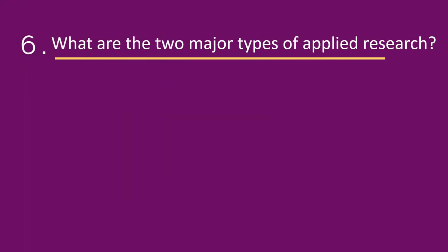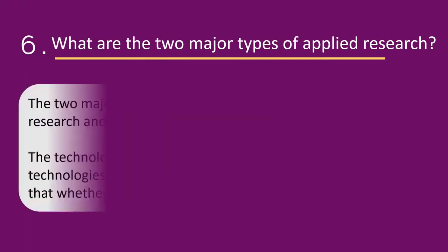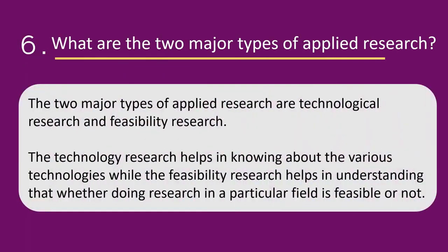What are the 2 types of Applied Research? The 2 major types of Applied Research are Technological Research and Feasibility Research. Technological research helps in knowing about various technologies, while Feasibility Research helps in understanding whether doing research in a particular field is feasible or not.